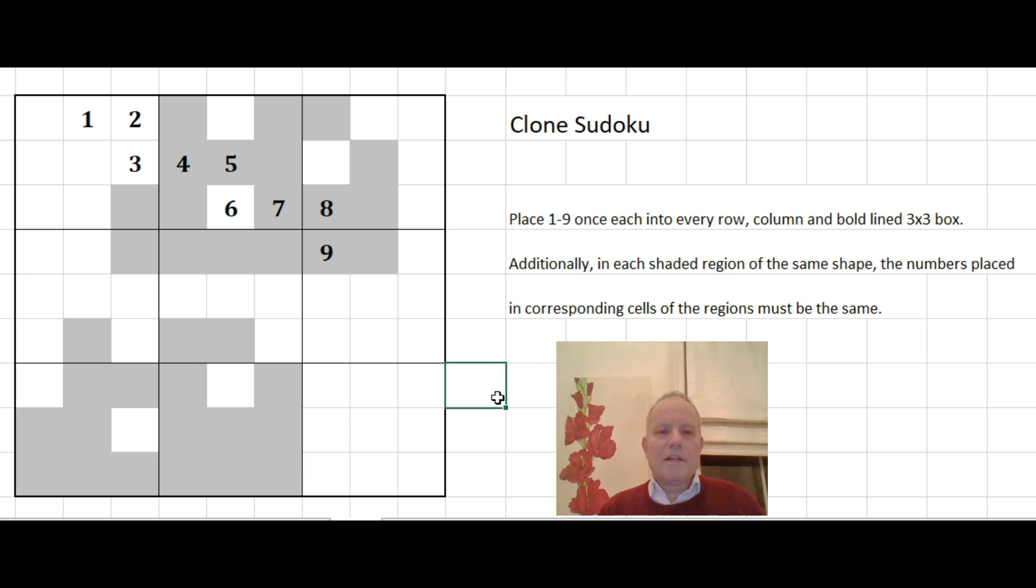So although it looks like we've only got nine given numbers in the grid we've got these two shapes and they're very powerful at adding a bunch more information. So once you get into variant Sudoku the number of givens isn't necessarily all that important. In fact it's probably quite a skill to have achieved a puzzle like this with only one of each number given.